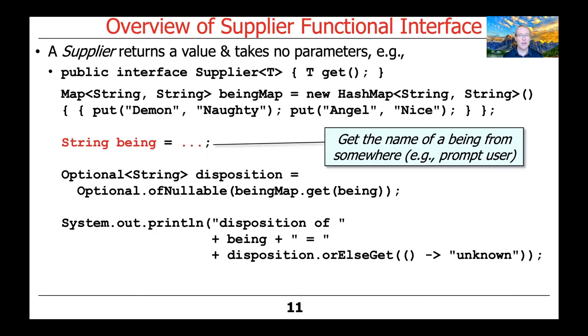We're then going to get an input that will be the name or type of the being — demon, angel, wizard, and so on. Let's assume that we get that from a prompt from a user, a GUI, or a file. It doesn't really matter for the purposes of our discussion.